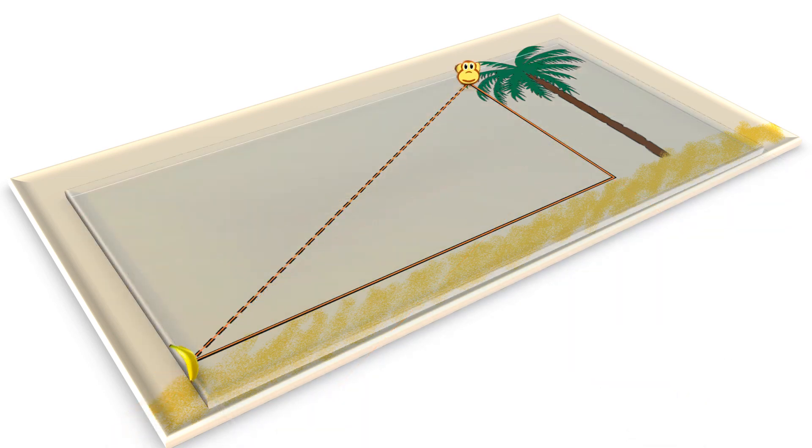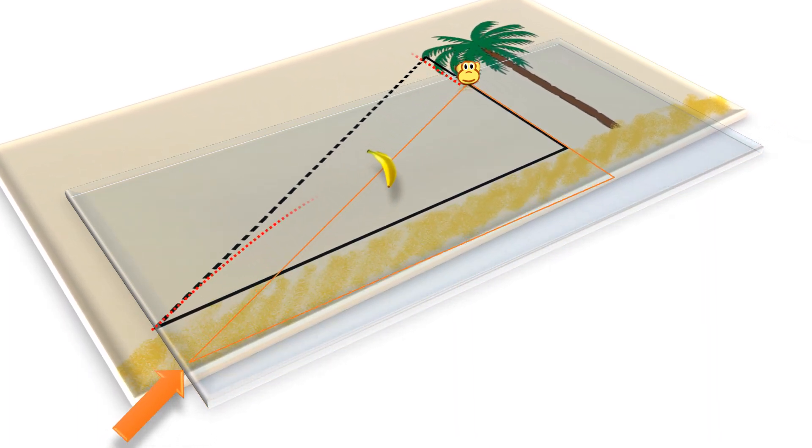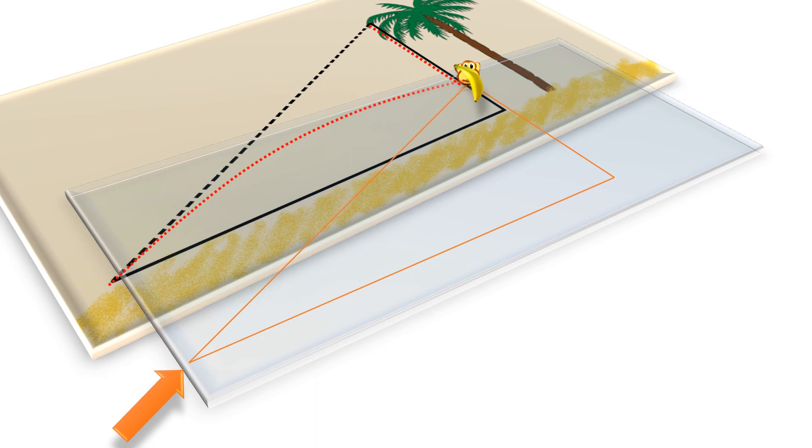On the previous examples, we had our camera fixed to the world, the lower plate. Now, let's fix the camera to the upper plate, so the monkey will not move. Of course, that only changes the perspective, but the result is the same.